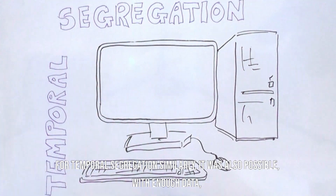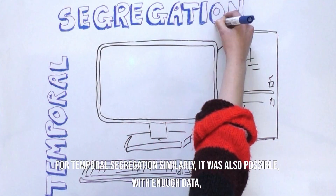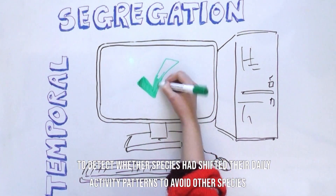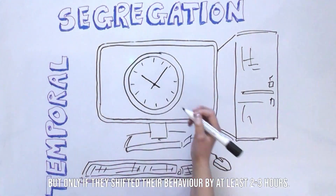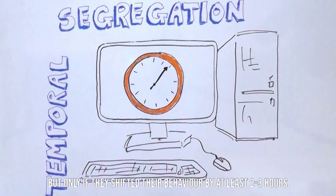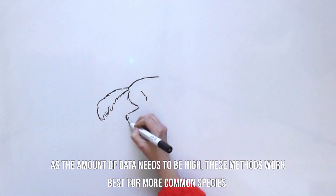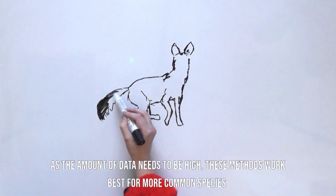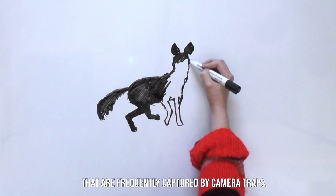For temporal segregation, similarly it was also possible, with enough data, to detect whether species had shifted their daily activity patterns to avoid another species, but only if they'd shifted their behavior by at least two to three hours. As the amount of data needs to be high, these methods work best for more common species that are frequently captured by camera traps.